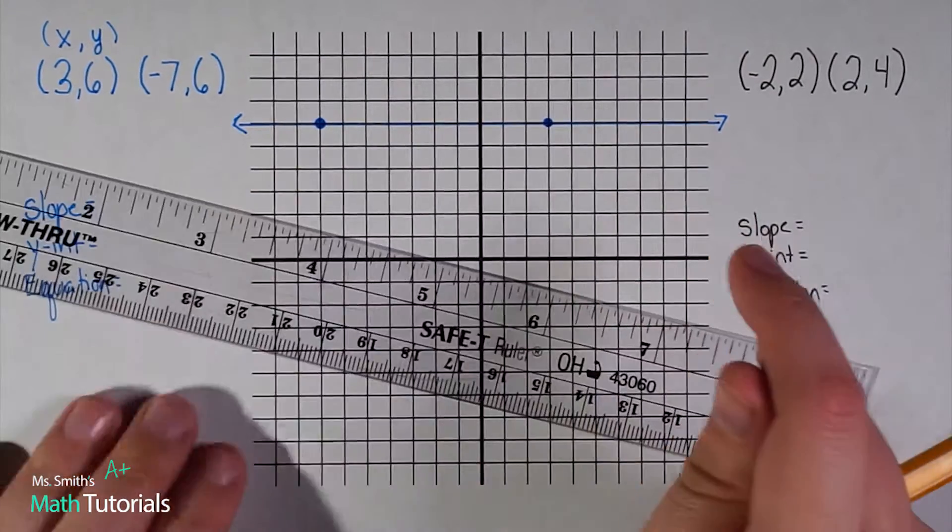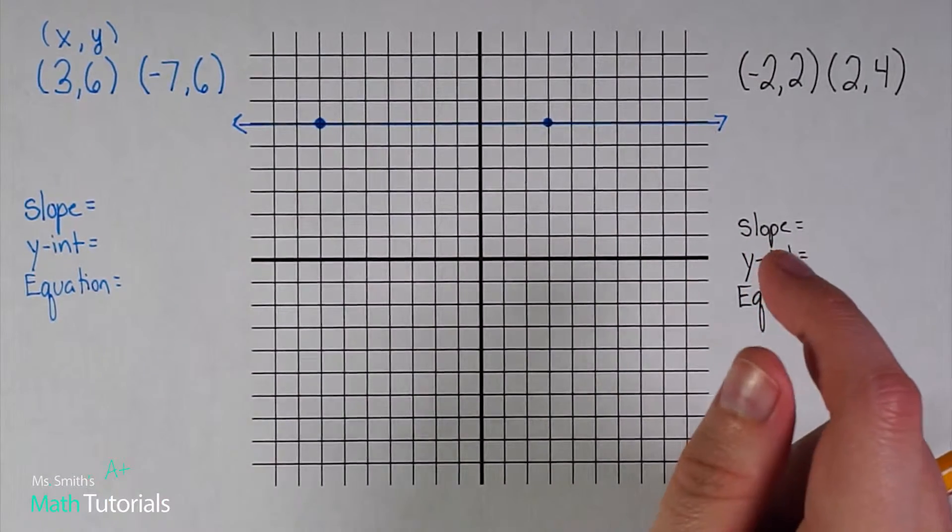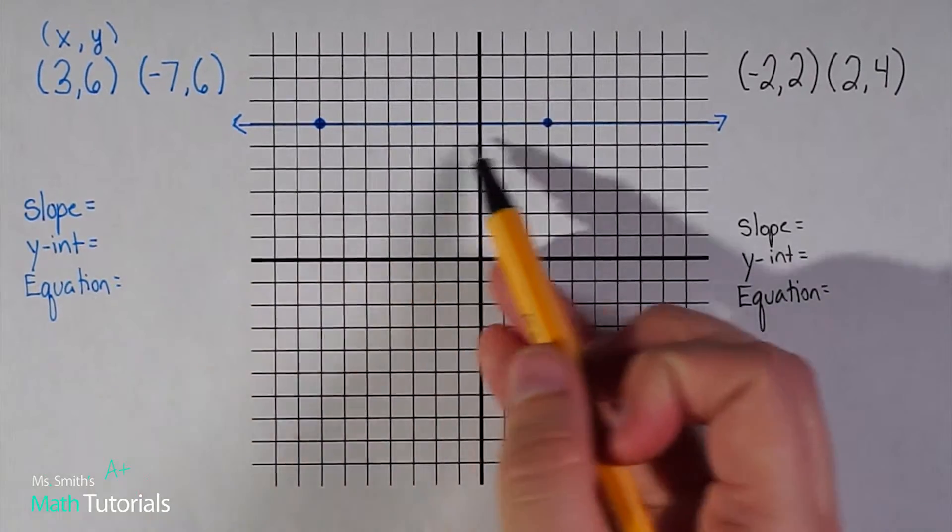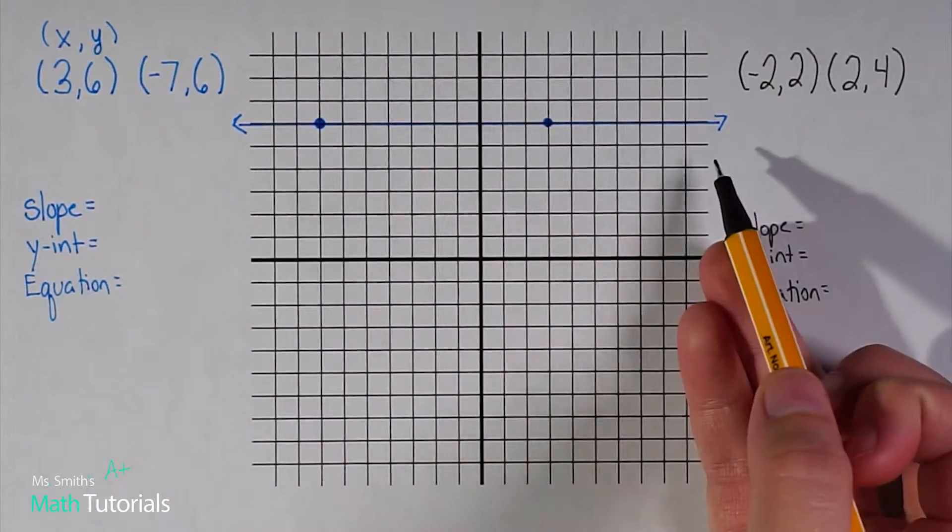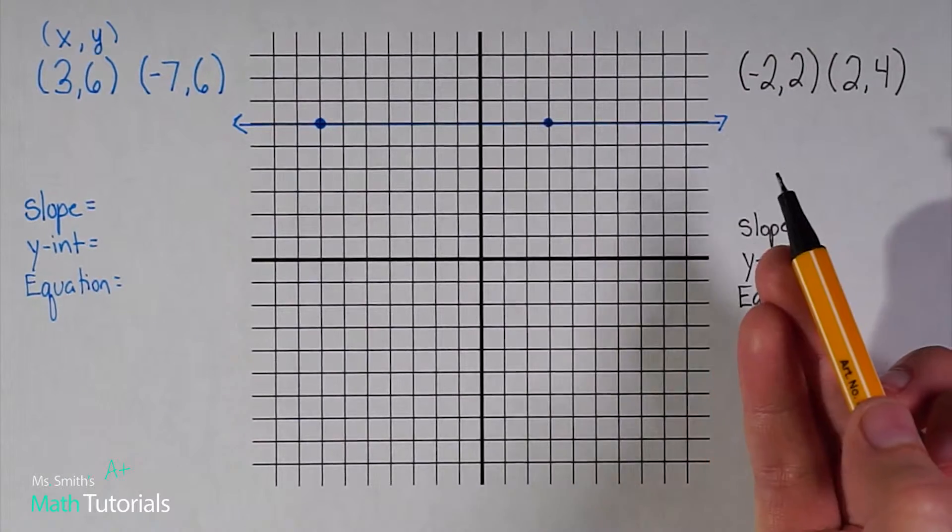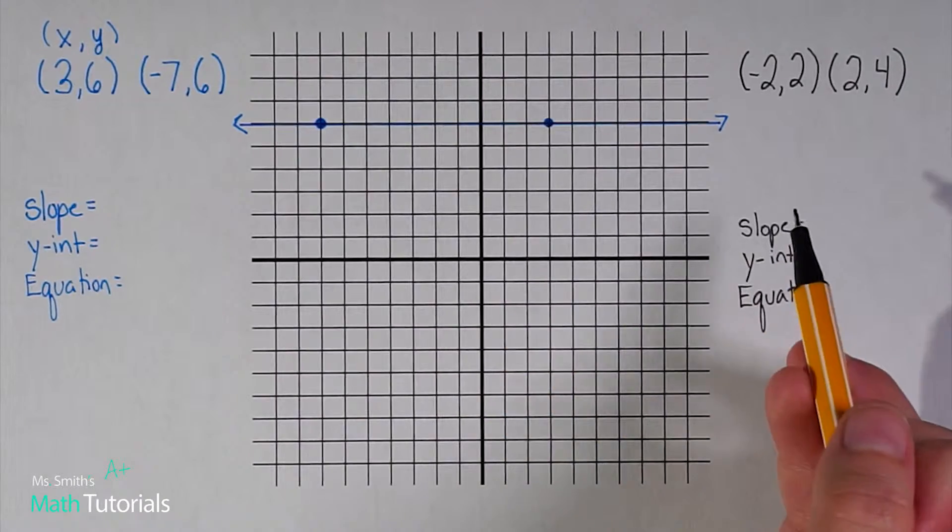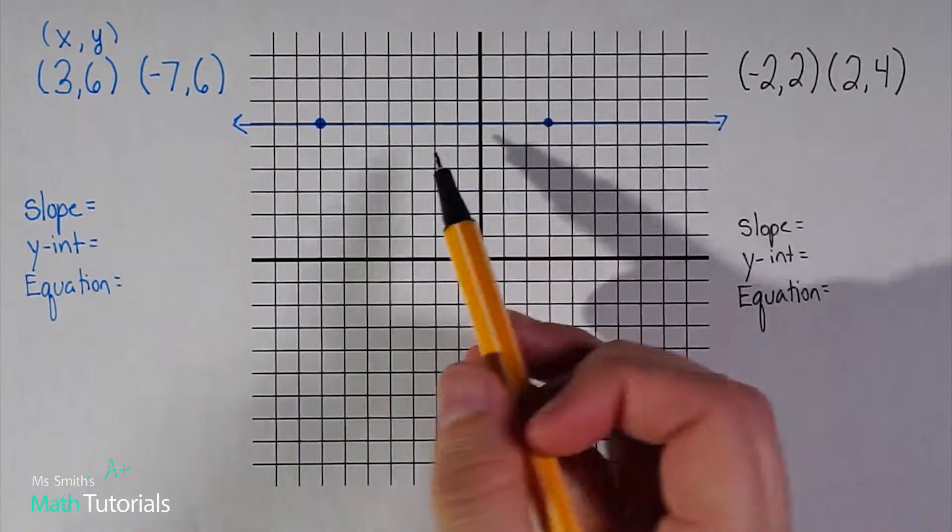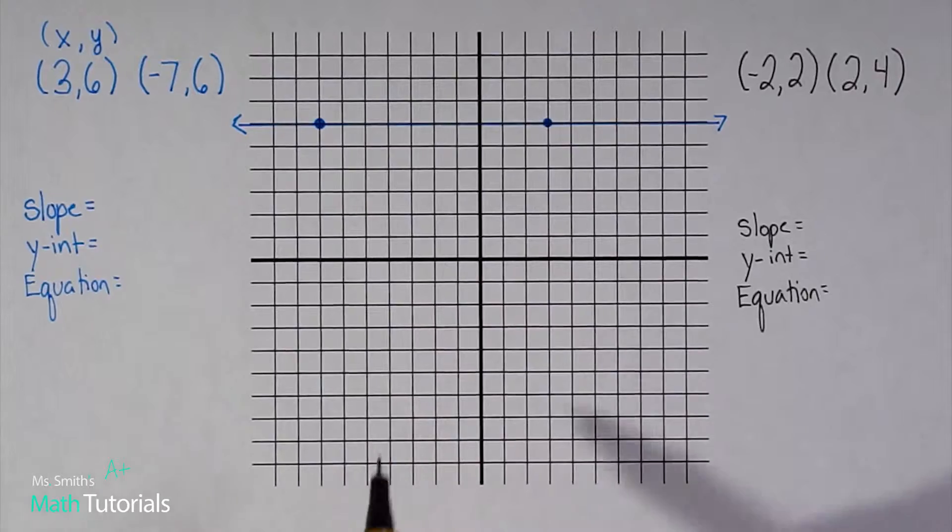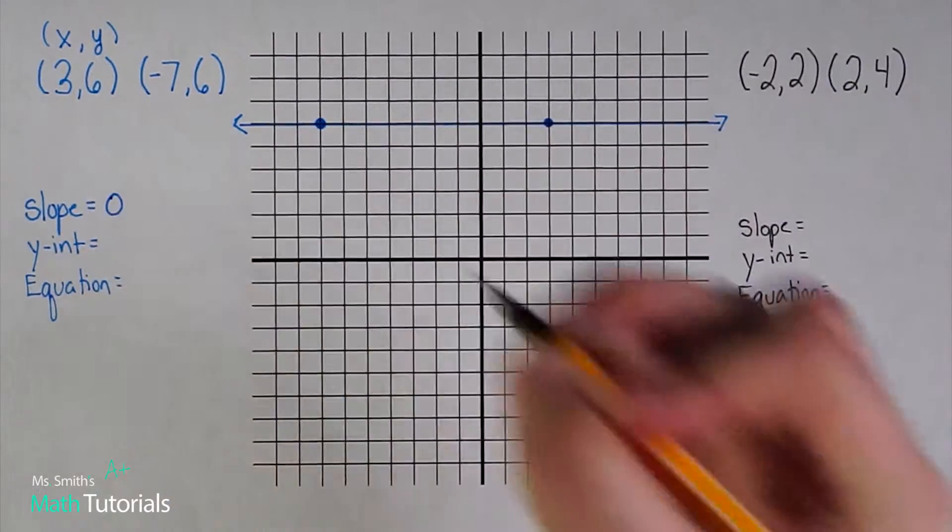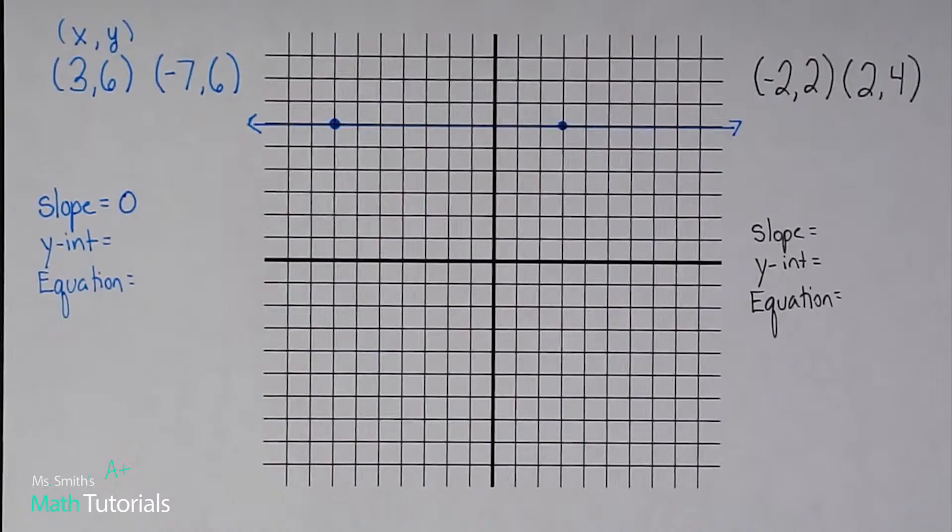In my video when we first introduced slope, we talked about what happens when you have a horizontal line and what that means for your slope. I'm going to assume you've watched it and know that a horizontal line means we have a slope of zero.